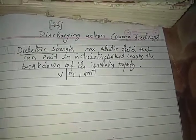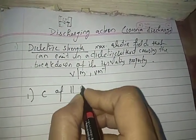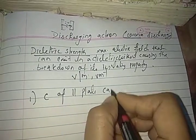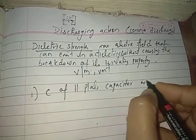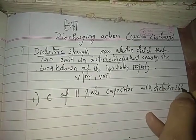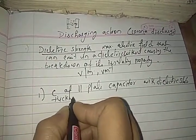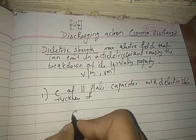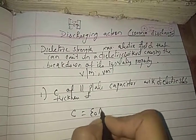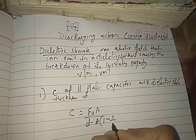The capacitance of a parallel plate capacitor with a dielectric slab of thickness T is given by: C = ε₀A / (D − T(1 − 1/K)), where K is the dielectric constant.